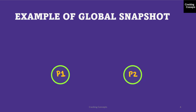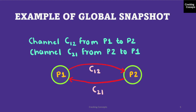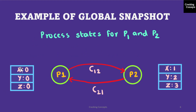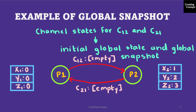Now we will look into an example of the global snapshot. Here we have two processes P1 and P2, with two channels C12 from P1 to P2 and C21 from P2 to P1. These are the process states for P1 and P2, and there are also channel states for C12 and C21. Currently they are empty because no messages are being sent, so this can be called the initial global snapshot.